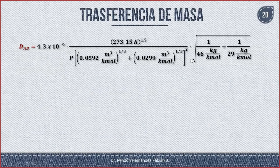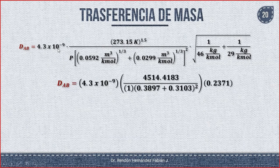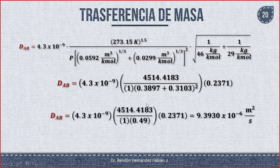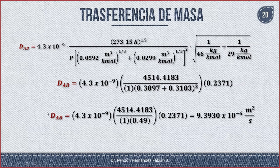Ahora hay que sustituir todos los datos en el modelo y realizar operaciones. Ten cuidado cuando hagas estas operaciones. Si lo haces en Excel, no te olvides de colocar los paréntesis correspondientes. Realizando los cálculos correspondientes, la difusión para este caso va a ser de 9.3930×10⁻⁶ m²/s. Hay que comparar con el resultado de la bibliografía y ver cuánto es el error.